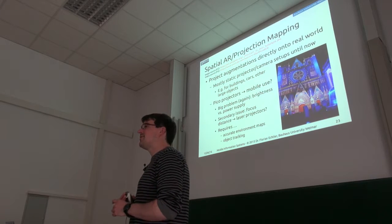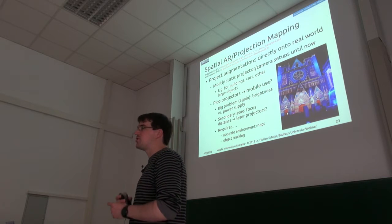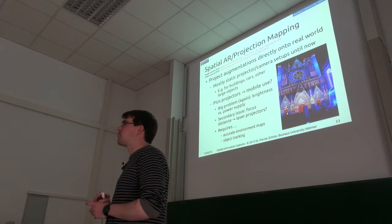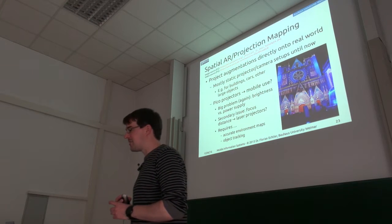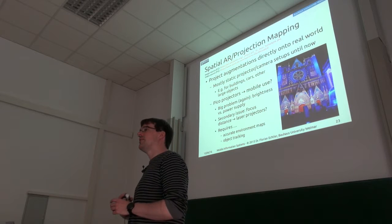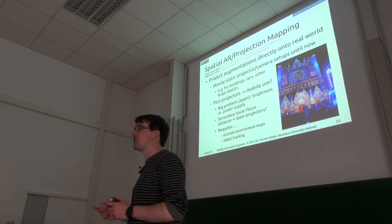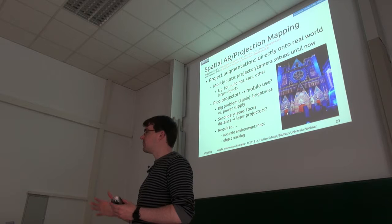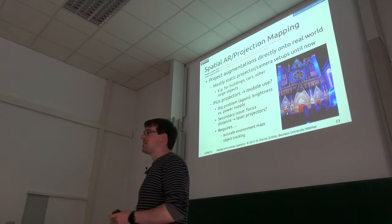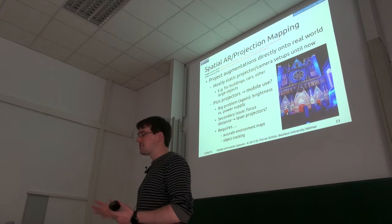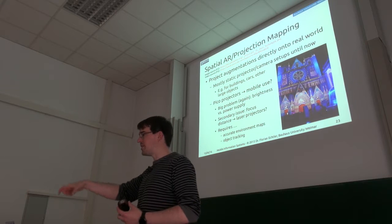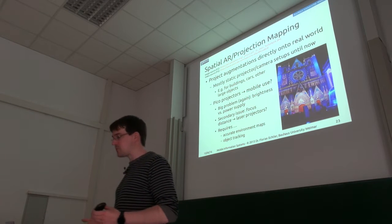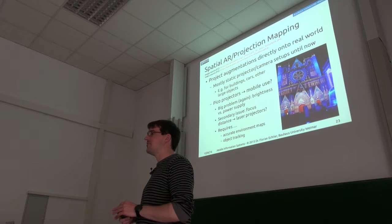The problem if you want to do that in a mobile way is that small portable projectors are usually not very bright, so even with just ceiling lights on you'll probably have difficulty seeing the projection. Another issue is that regular projectors have a single focal plane — this projector on the ceiling is focused on the wall, but if you're projecting into a room with very different distances, everything outside a narrow range will be blurry. One way around this would be laser projectors, which are always in focus, but they are much more expensive.